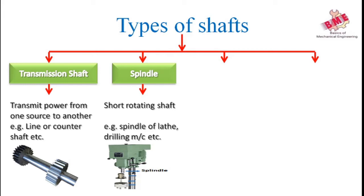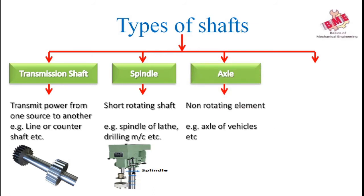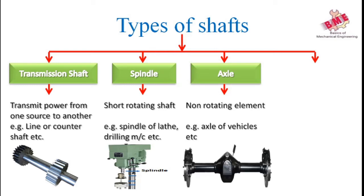Next is the axle. An axle is a non-rotating element. It supports rotating elements like wheels and hoisting drums, which are fitted to the housing by means of bearings. However, an axle does not transmit any torque because it is stationary — it only supports the wheel. In the figure, we can see an axle holding the two wheel rims of a vehicle.